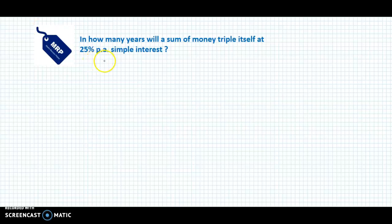Hello and welcome back. We now discuss an example from simple interest. The question is: In how many years will a sum of money triple itself at 25% per annum simple interest? We have not been given the principal.